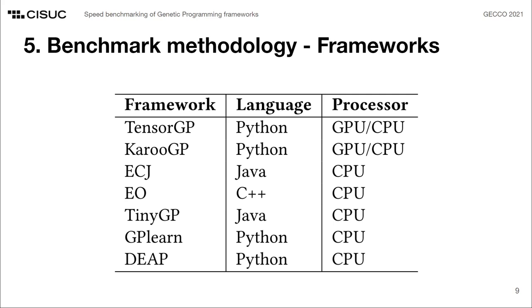Concerning the vectorized systems, we analyzed TensorGP, which we already detailed, and we include KaroGP, a similar engine also using TensorFlow, that was already applied to some genetic programming applications.